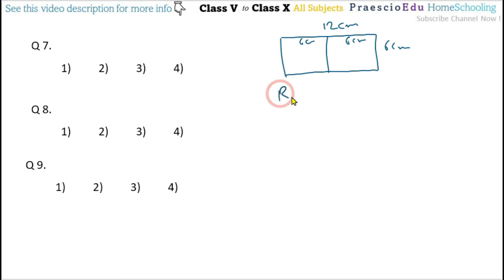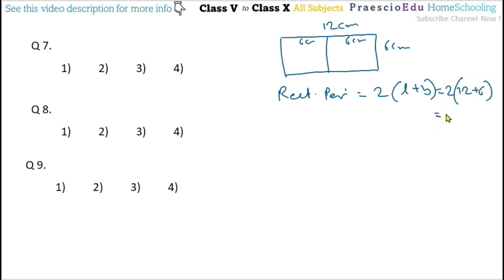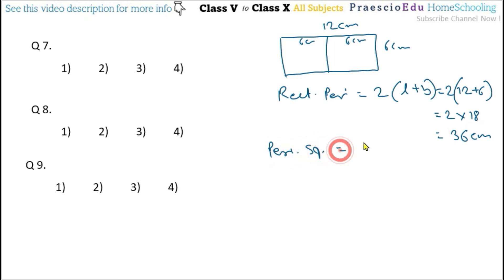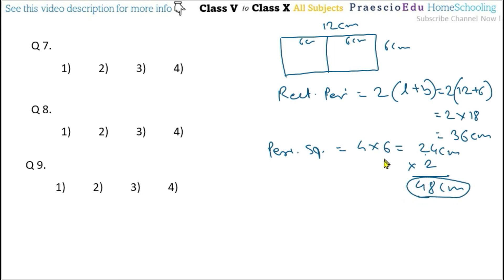Perimeter of the rectangle = 2 × (12 + 6) = 2 × 18 = 36 cm. Perimeter of one square = 4 × 6 = 24 cm. For two squares: 24 × 2 = 48 cm. The difference = 48 − 36 = 12 cm. This is given in option number 4.